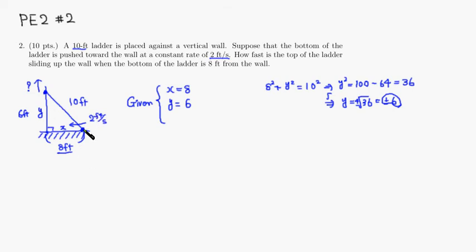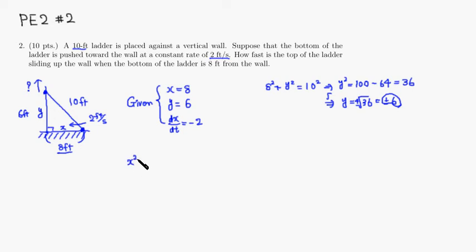Since the bottom of the ladder is pushed toward the wall, the distance X is changing at the rate of 2 feet per second. So we're talking about the rate of change of X with respect to time t. Since this is shrinking, it's going to be negative 2. Then what we need to do is set up an equation using X and Y, using the Pythagorean theorem again. So X squared plus Y squared is equal to 10 squared.